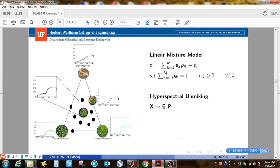The most widely used model for hyperspectral unmixing is the linear mixture model. So in linear mixture model, each pixel is a convex combination of the end-members and the proportional values.